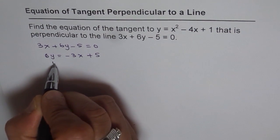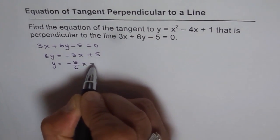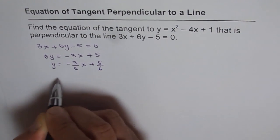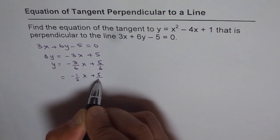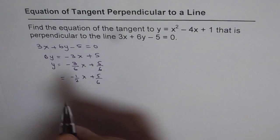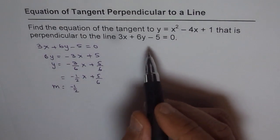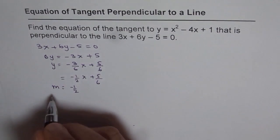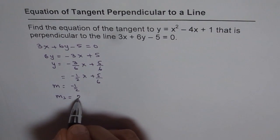Dividing by 6, we get y = -3/6 x + 5/6, which simplifies to -1/2 x + 5/6. So the slope of this line is -1/2, and we need perpendicular to this line. The slope of the perpendicular line will be the negative reciprocal, which is 2.